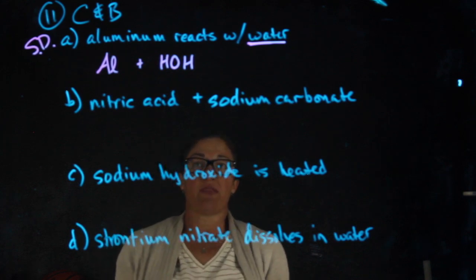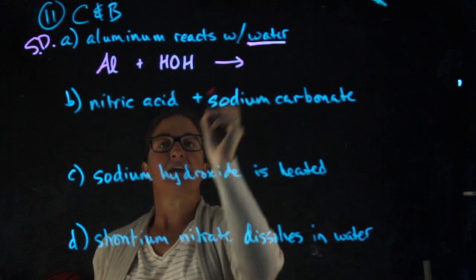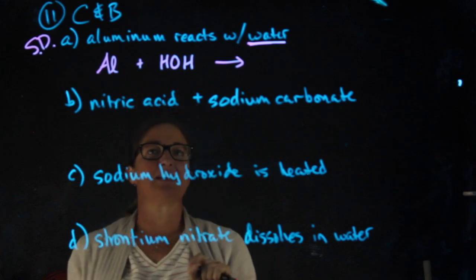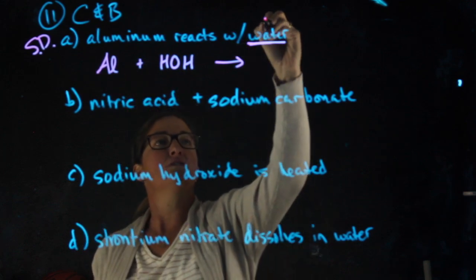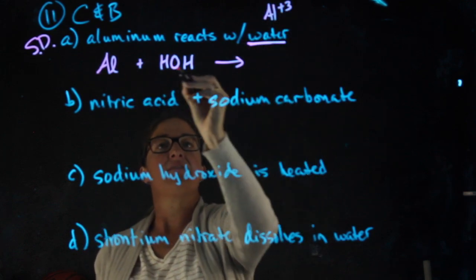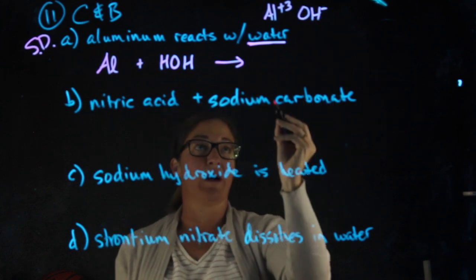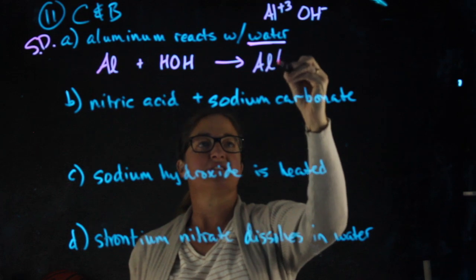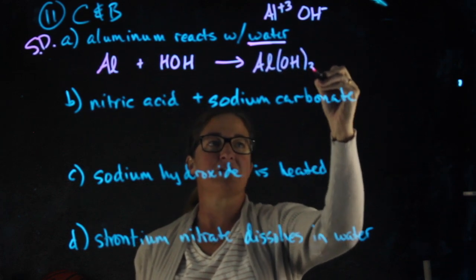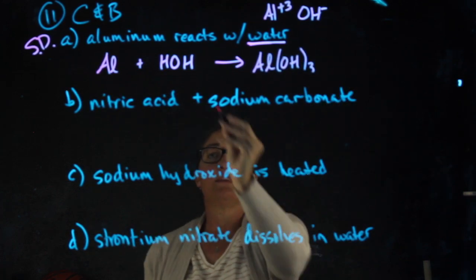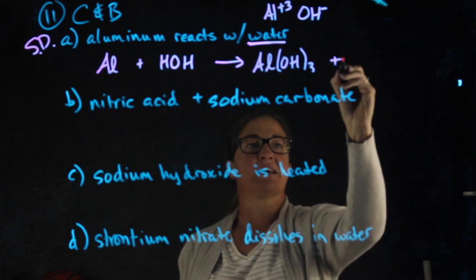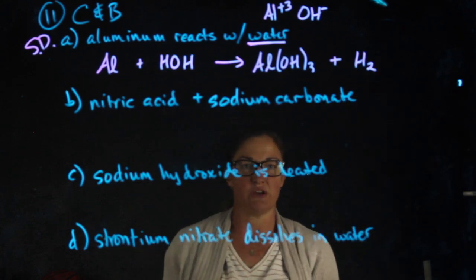When the aluminum combines with the water, the aluminum is going to attach to the negative ion. Aluminum becomes a plus three. The negative ion in water is hydroxide, which is a minus one. So my first product is aluminum hydroxide. Now that the hydrogen has been kicked out and it's alone, it is H2.